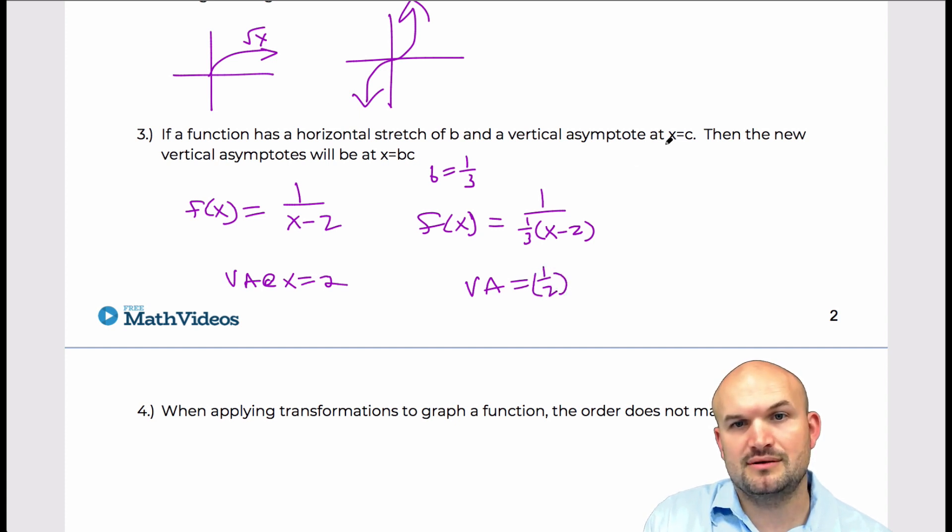And so what it's saying is that my new vertical asymptote then needs to be what my vertical stretch is times where my vertical asymptote was previously, which is one third.